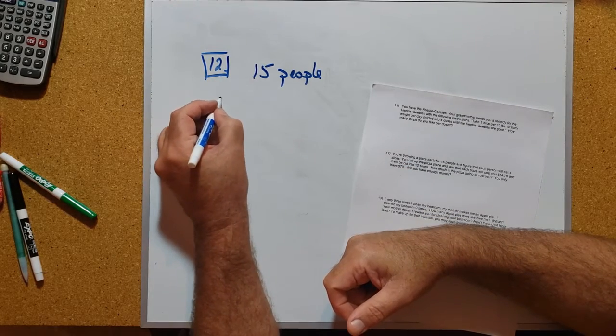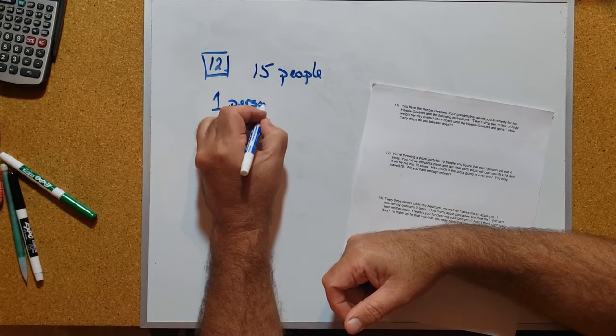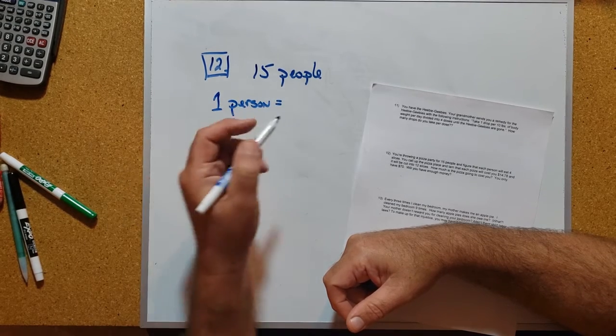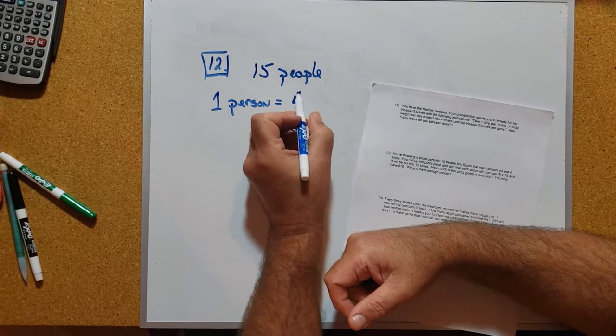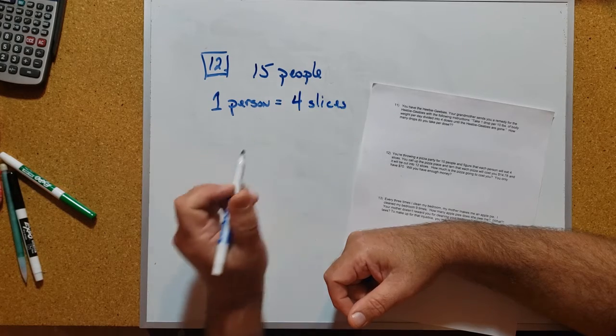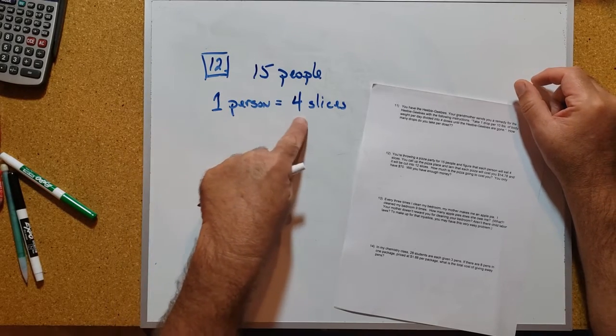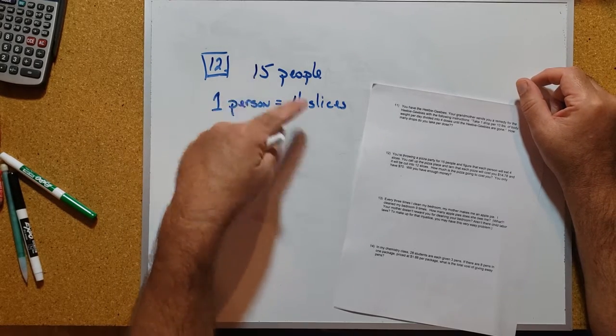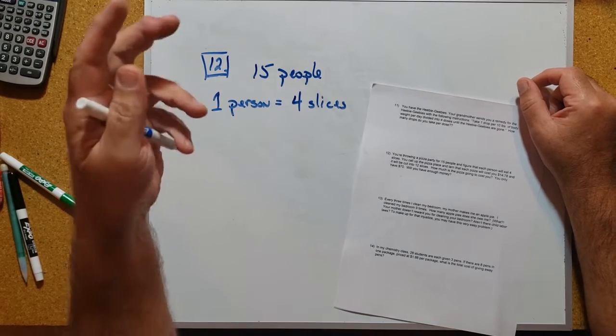Each one person in terms of their pizza consumption will be consuming four slices. We could do this in our head - well, if each person is going to eat four slices then 15 people would require how many slices? 15 times 4, which is 60.